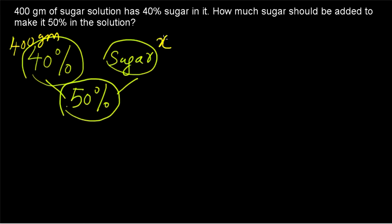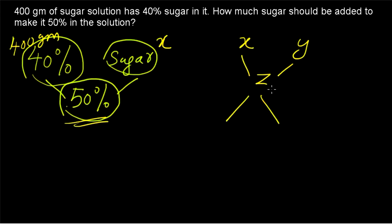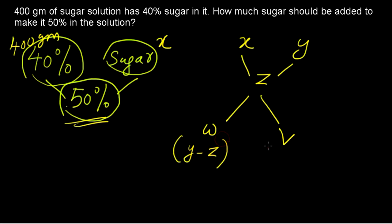A combination of two ingredients is taking place to get a resultant mixture, so we can use the rule of allegation. By the rule of allegation, if two ingredients x and y are mixed together to form z, then the proportion of x to y is given by the difference between y and z (call it w) and the difference between x and z (call it b). These represent differences, not necessarily subtraction in one direction.